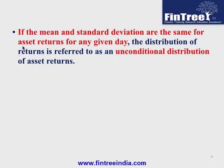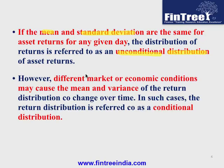If mean and standard deviation are the same for asset returns on any given day, we call it an unconditional distribution — think of it as a stable dataset where mean and standard deviation are not changing. However, if due to different market or economic conditions the mean and variance change over time, then this type of dataset is referred to as a conditional distribution. Toward the end of the reading, we will solve questions testing your understanding of VAR with conditional and unconditional datasets.